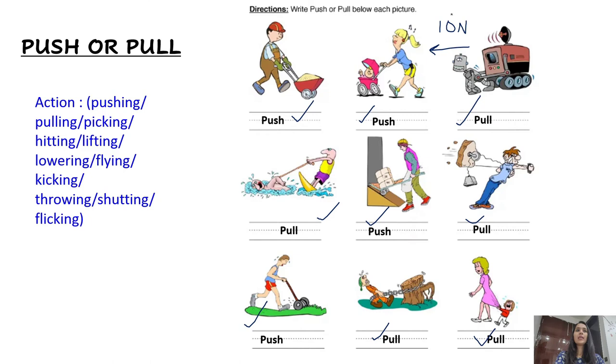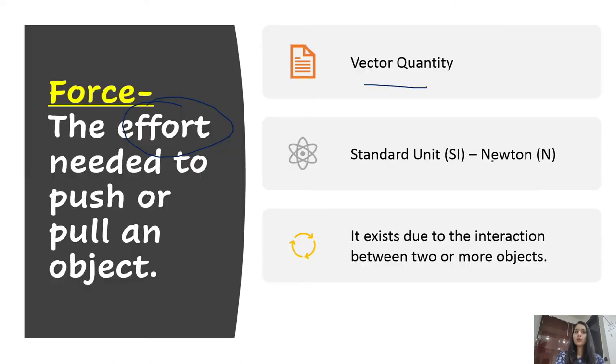So here in this case I have written N. What does this N signify? This N is the standard unit for force and is short form for Newton. So I have capital N denoted for Newton, which is the standard unit of force. Two points we have done so far: force is a vector quantity and the standard unit is Newton, which is capital N.